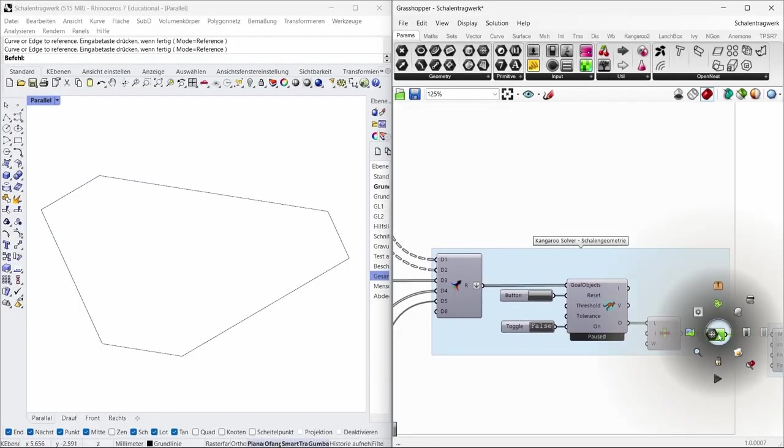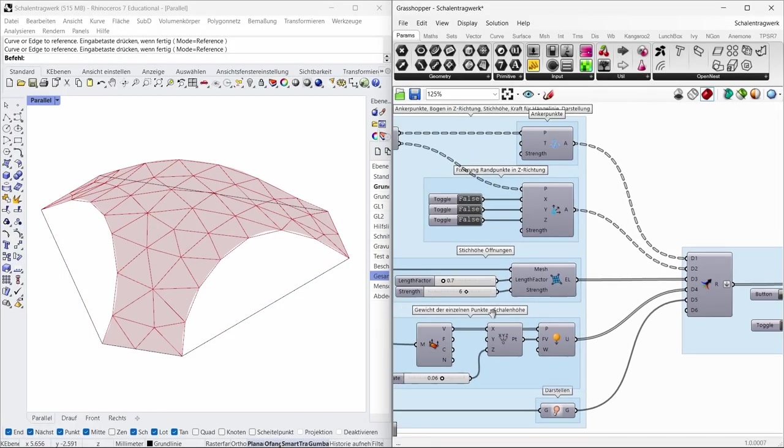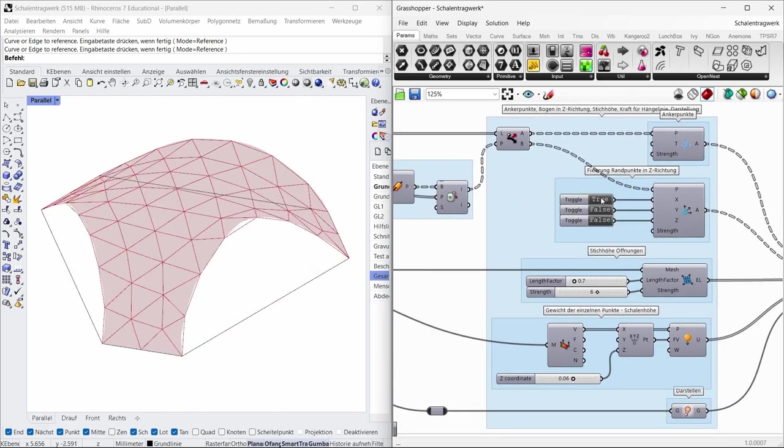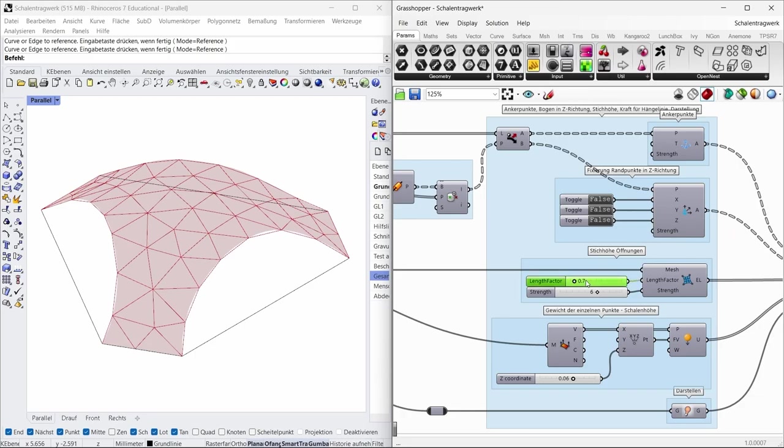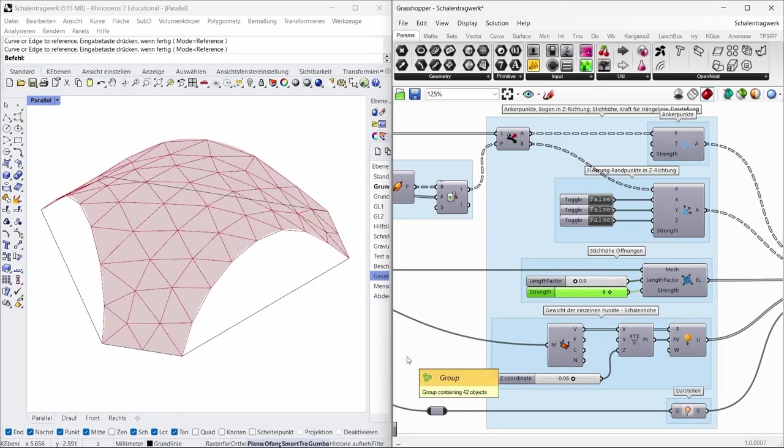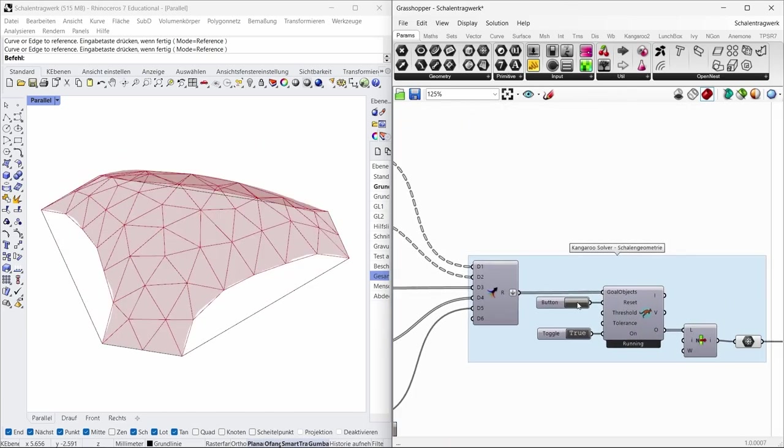Just as there are physical models, there are also models on the computer. Here you can see in the software Rhino, or rather the associated plugin Grasshopper, how a hanging model is simulated and in this way, triangulated forms emerge.